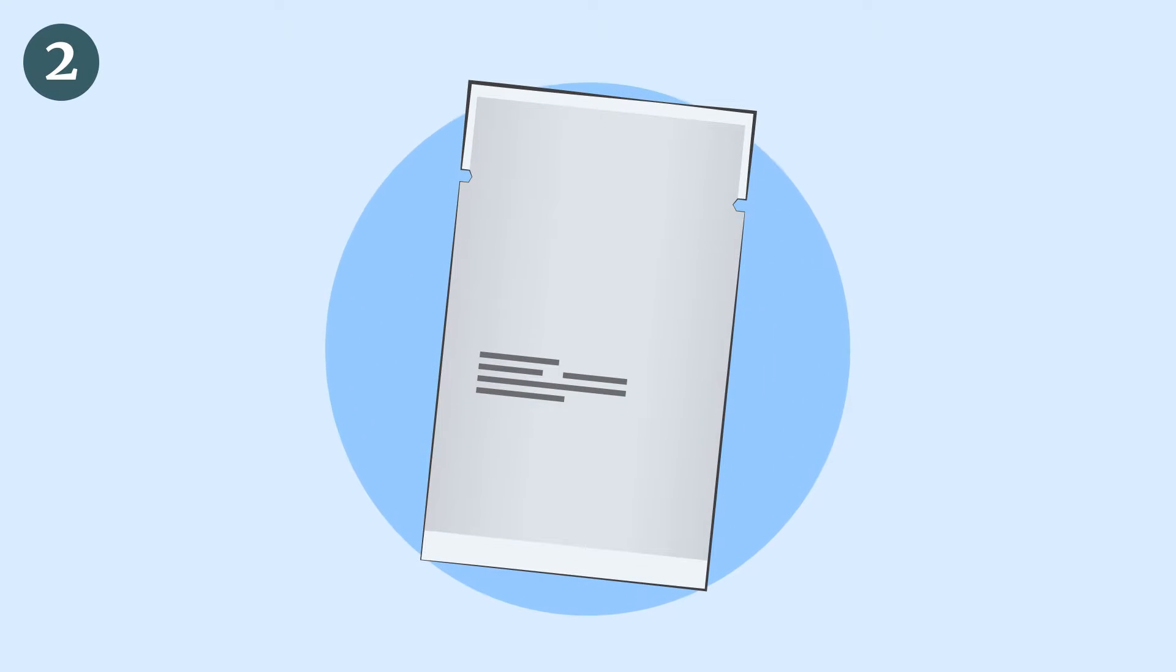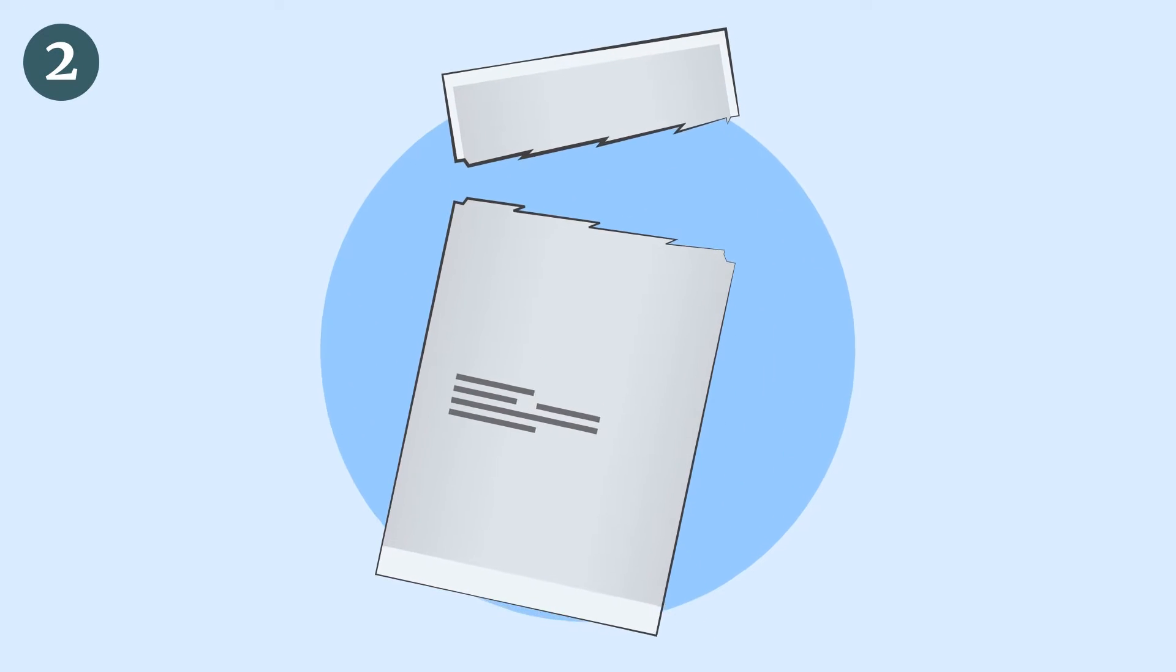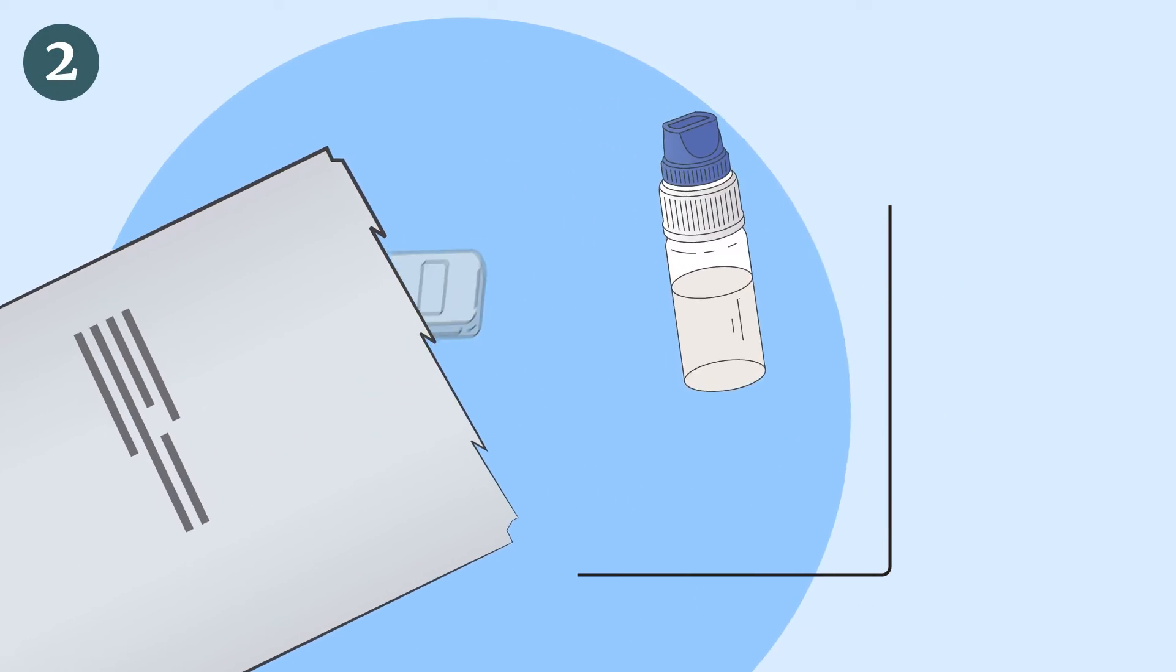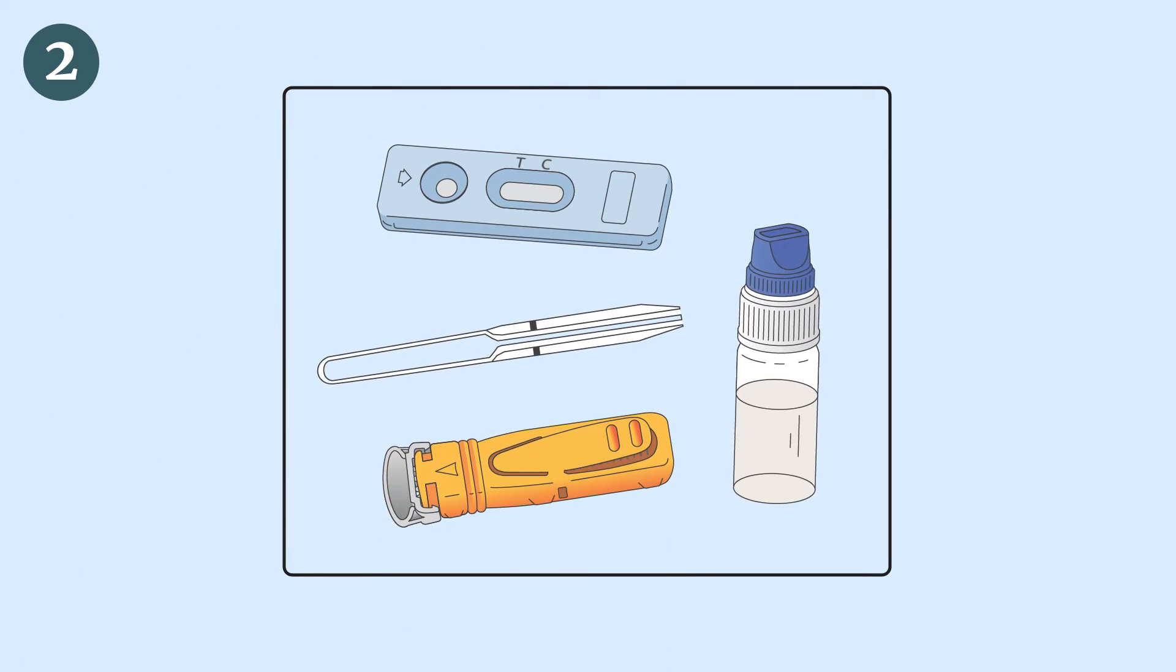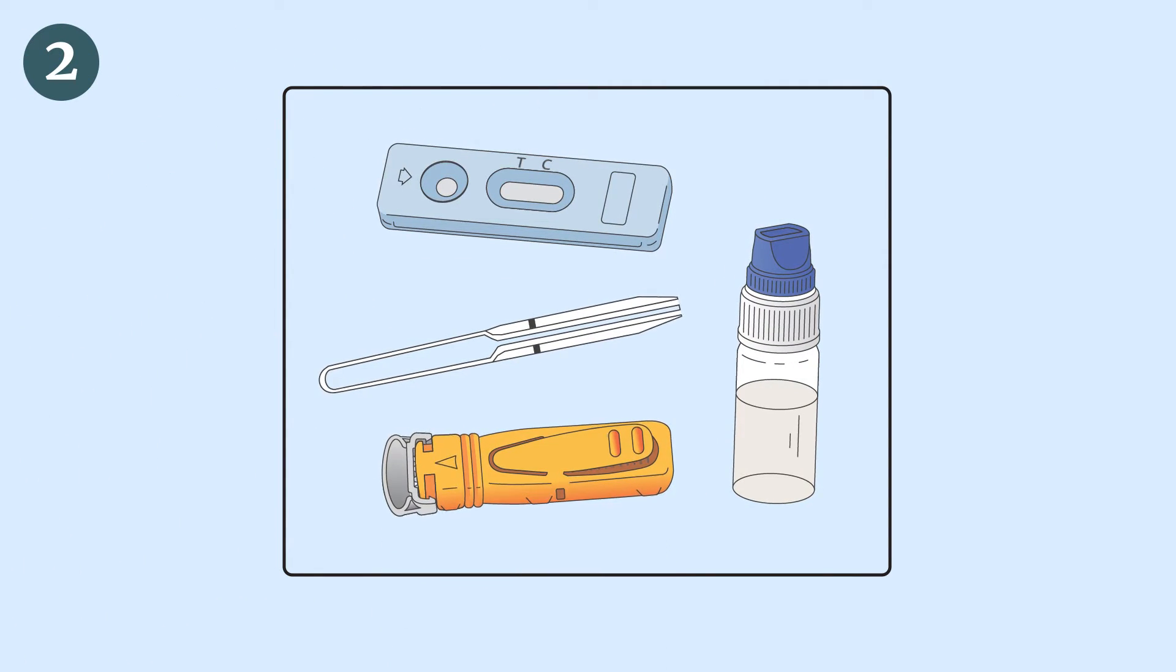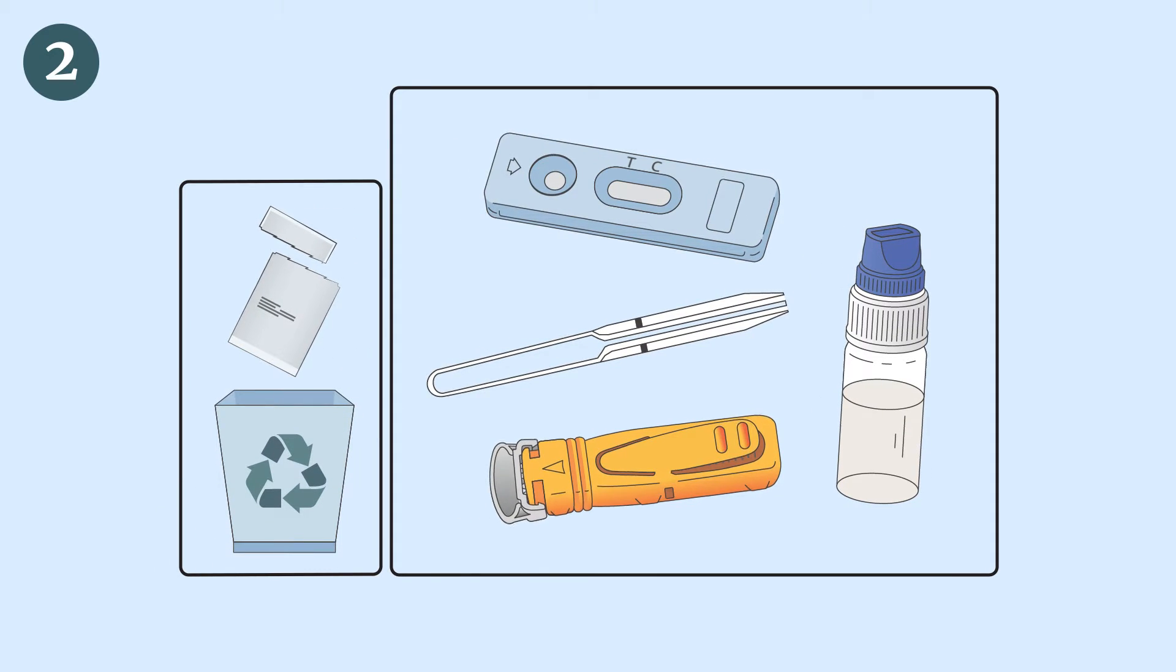Prepare the test device, the pipette, and the dropper bottle by taking them out from the protective pouch and place them within reach of your hands. You will need them later. Discard the aluminum pouch.